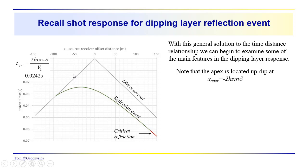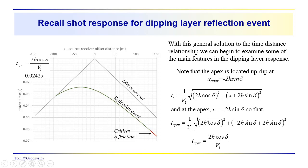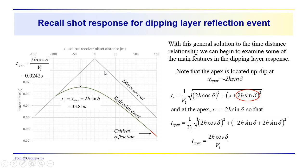We have this particular dataset to illustrate these points, and the general form of the reflection event for the dipping layer. The reflection event takes this form, where x0 is not equal to 0. We were able to solve for t apex and x apex. In hyperbolic form, x minus x0 tells us that x0 is minus 2h sine delta — and with a minus times a minus giving a plus — x0 equals minus 2h sine delta in the up-dip direction.